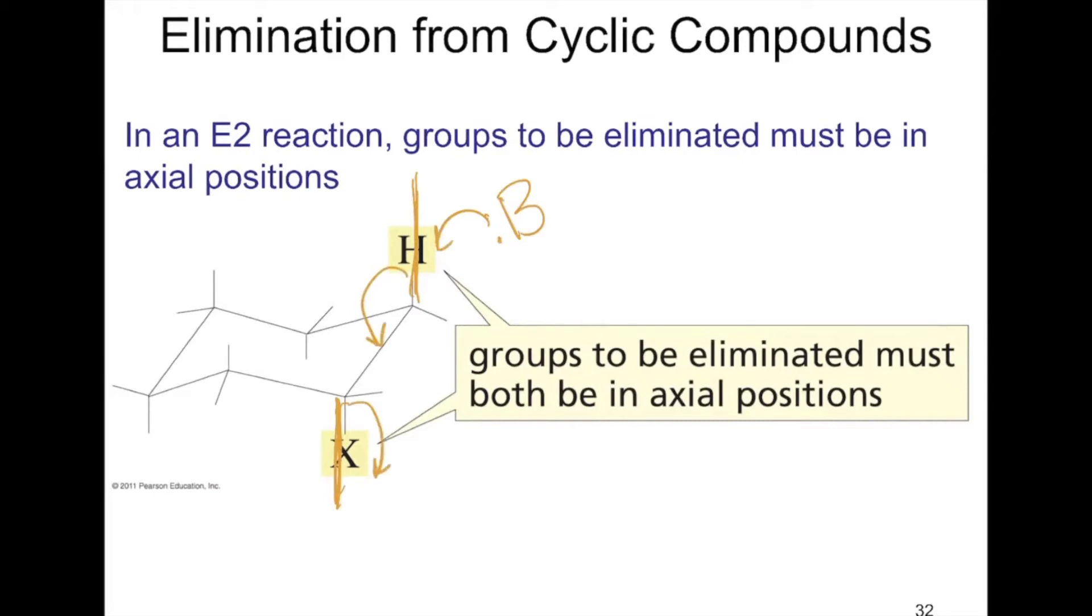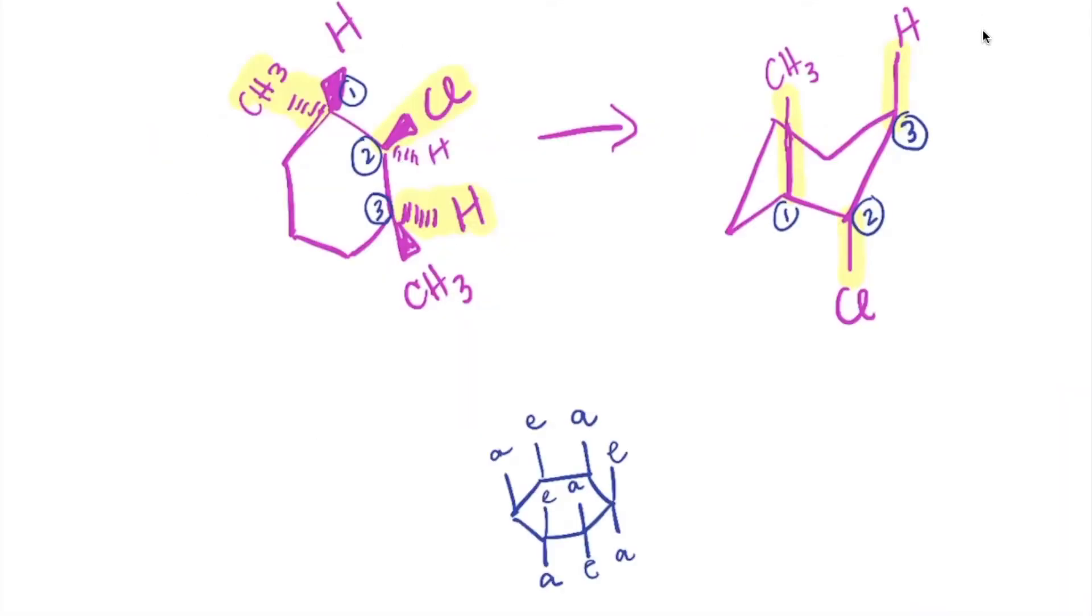This setup is anti-periplanar where we have an axial hydrogen next to an axial leaving group. What does this mean for cyclohexane? Let me show you.